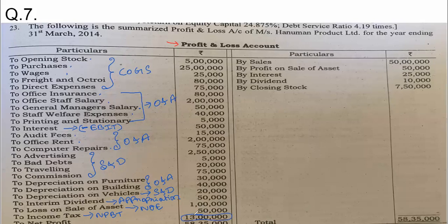The final profit — NPAT — should come to 13,00,000. We are not calculating a new profit here; we are just preparing this in a new format. When preparing in a new format, the profit cannot change. Profit must remain the same.